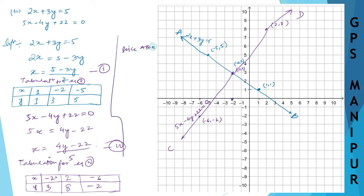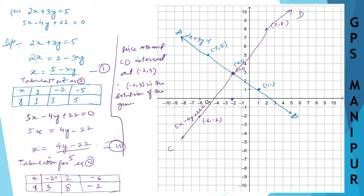Lines AB and CD intersect at the point minus 2 comma 3. Therefore, (−2, 3) is the solution of the given equations, where x is equal to minus 2 and y is equal to 3. I hope you understood. Thanks so much — we will meet in the next video.